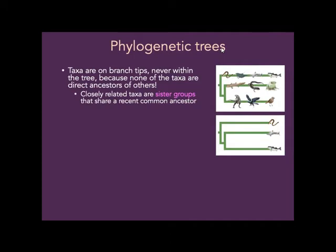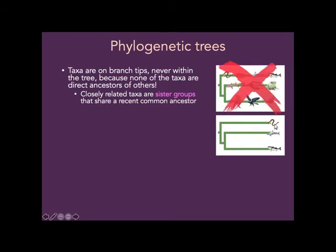One thing to clarify: any taxa you're looking at are on the tips of the branch — they're never within the branch. The way that evolution works, you don't have dinosaurs slowly morphing into Archaeopteryx morphing into birds. Instead, you have a speciation event in the past that resulted in dinosaurs separating from Archaeopteryx, and multiple speciation events that occurred between Archaeopteryx and birds. The species we know about are on the tips, and the tree represents how they're related to one another.